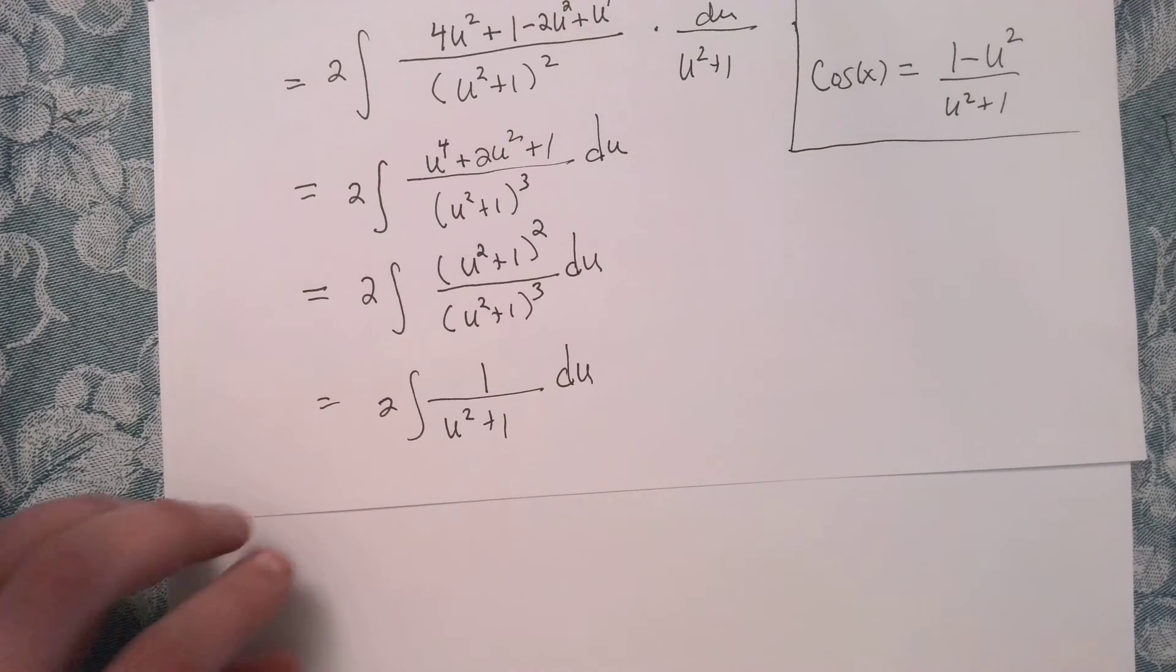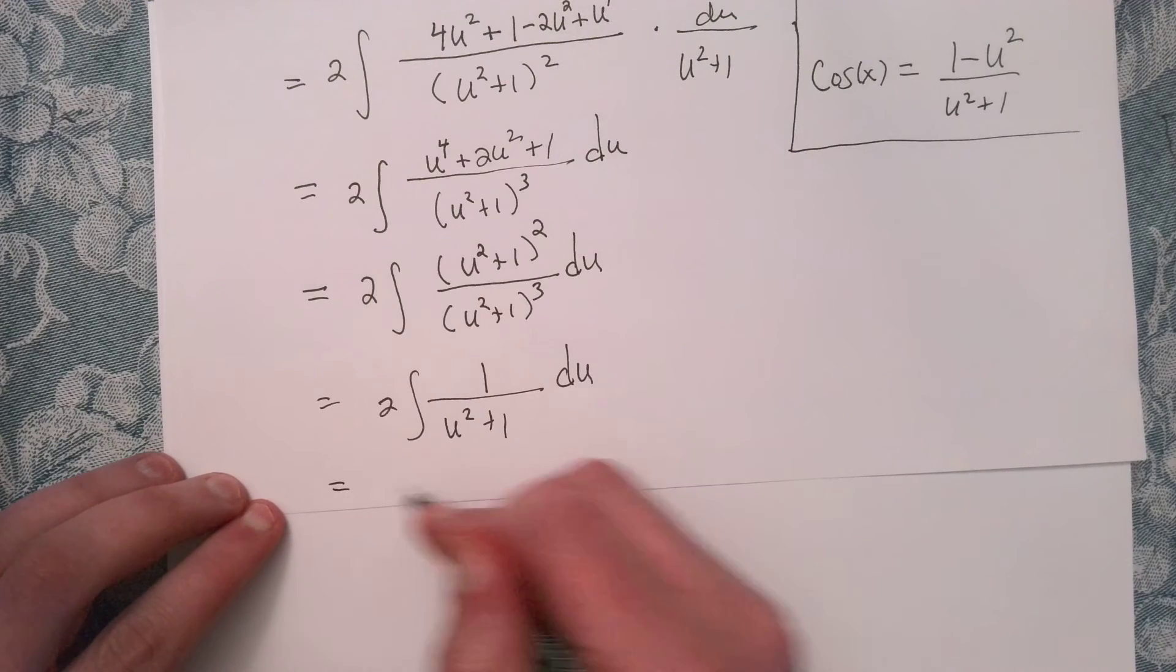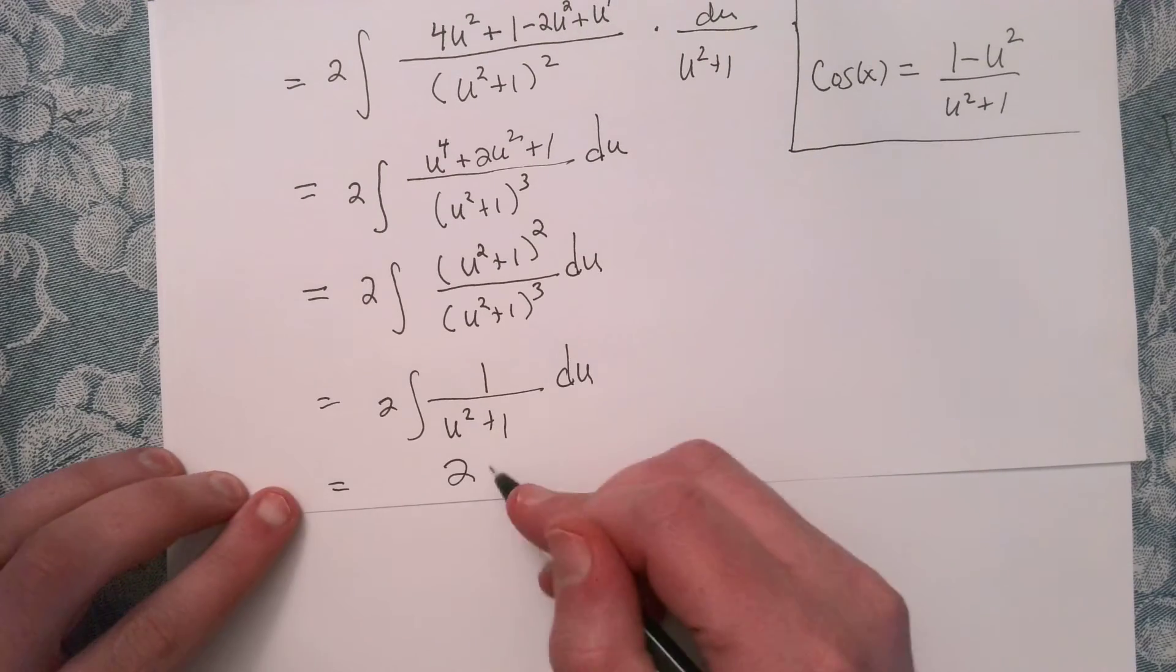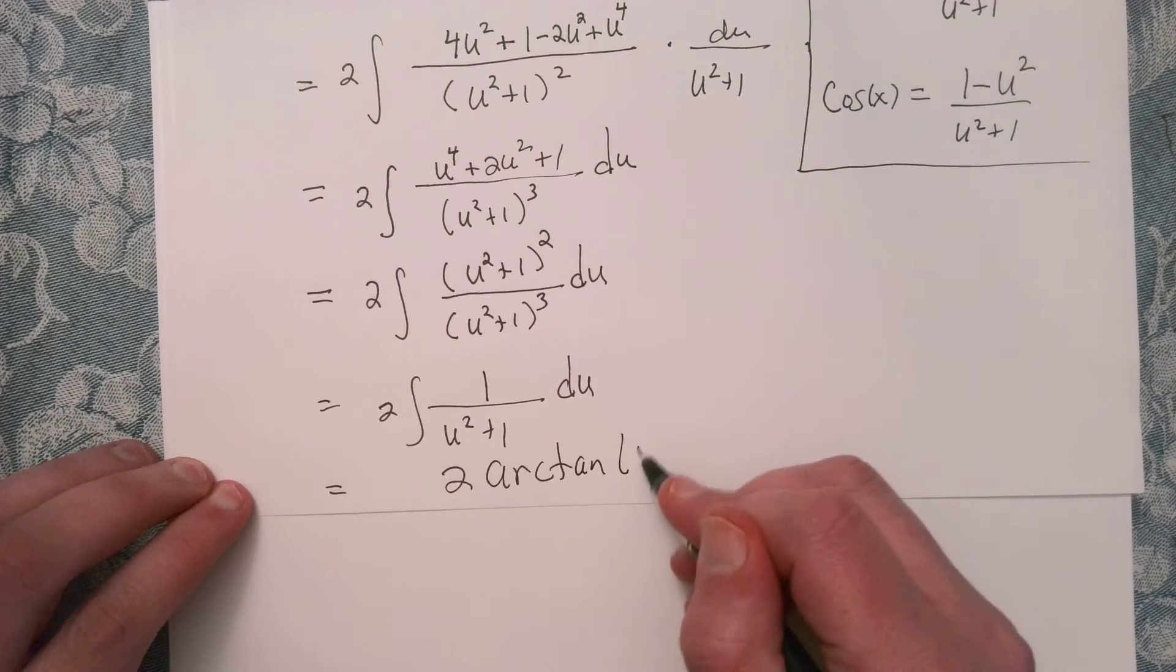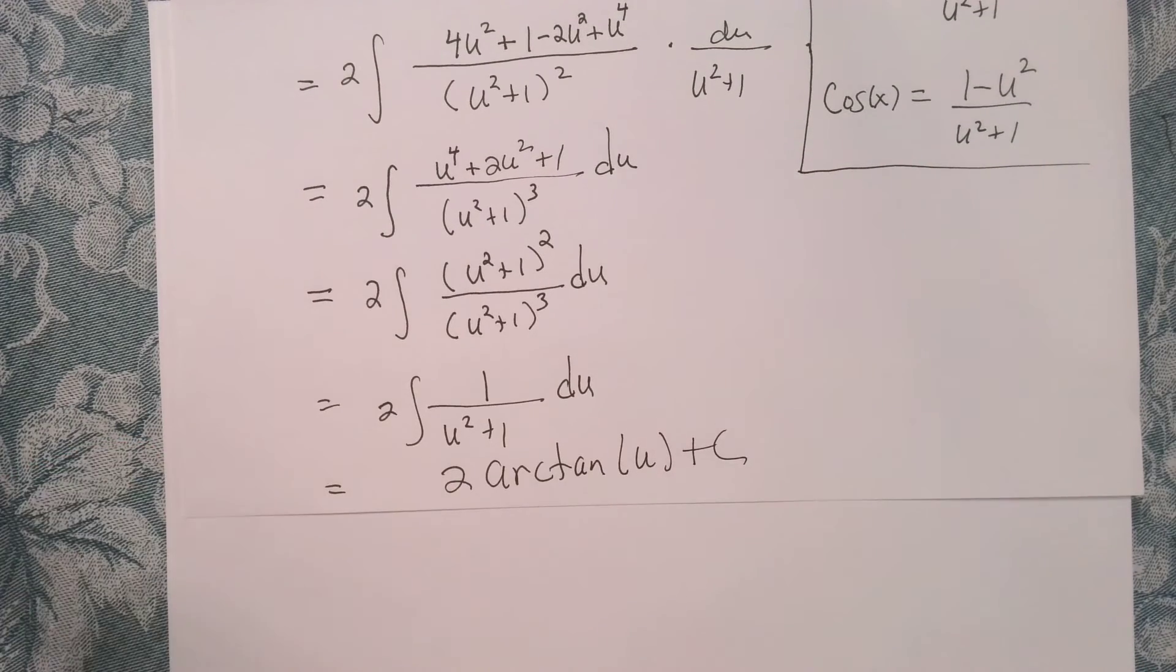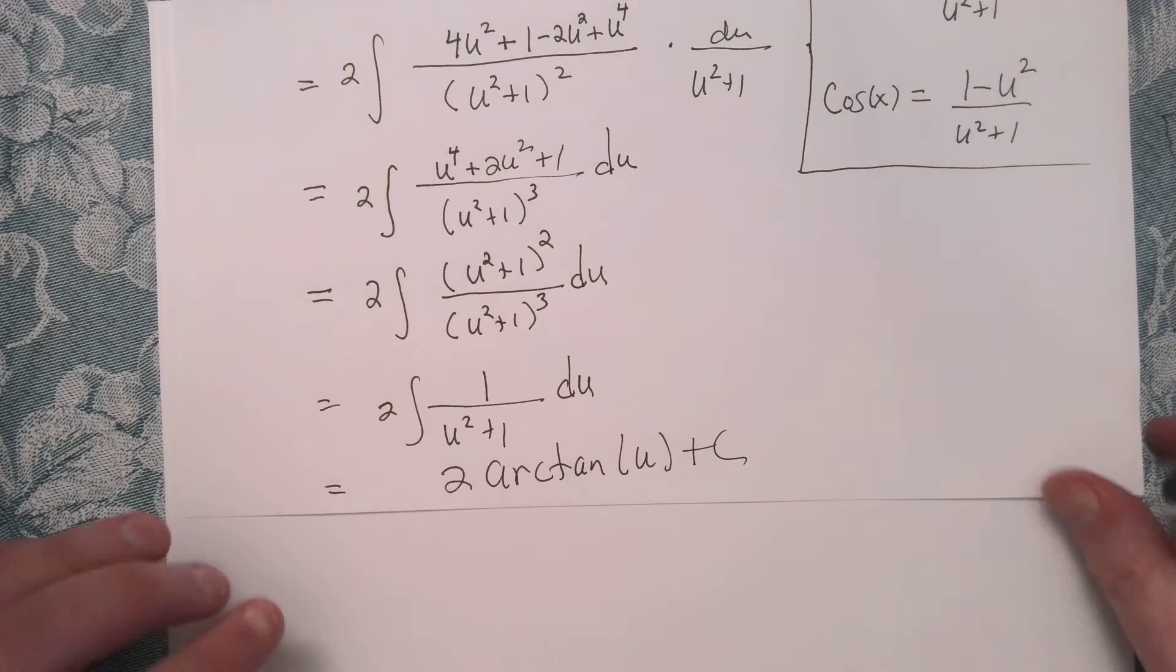So yeah, seems pretty nice. Let's see what that gives us. So that gives us 2 times the arctangent of u plus c. But let's go back. Remember what u is.